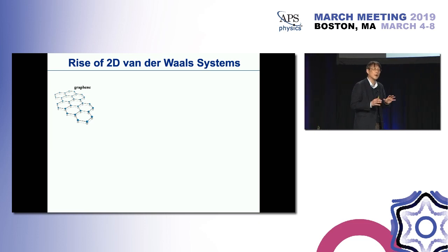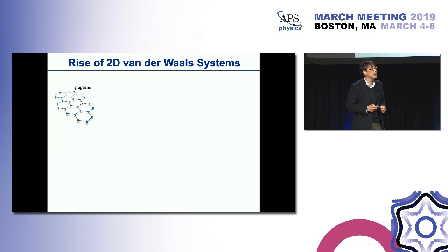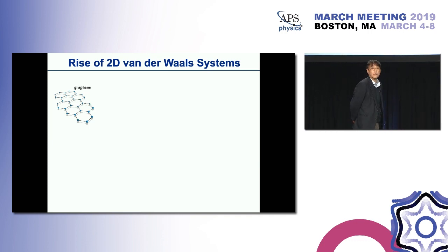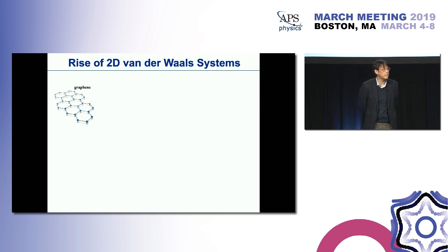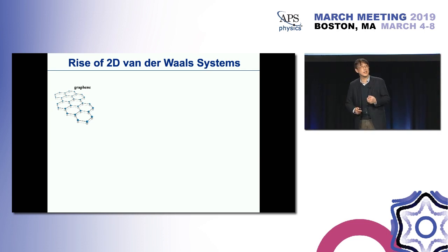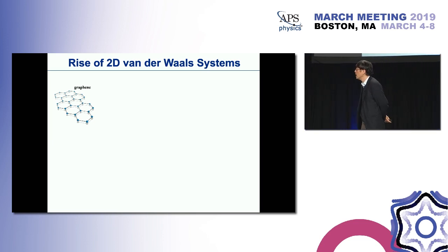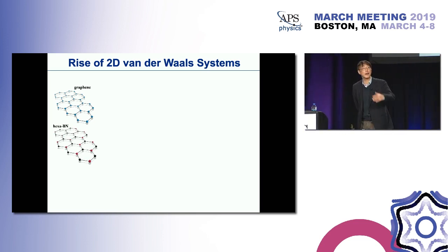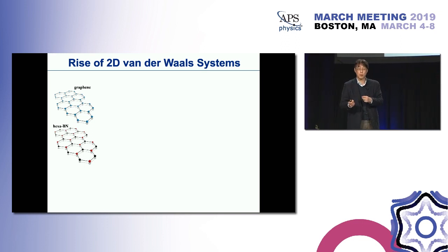A lot of people started to try to understand this two-dimensionality of the system, but that was just the beginning of really big endeavors. Soon after graphene, people started to realize there are other types of two-dimensional materials that can be produced, either by growth, exfoliation, or various methods. One by one, there was a rediscovery of these materials in extremely small atomic-layer form. For example, boron nitride, which is very similar to graphene in form — just replace the two carbon atoms with nitrogen and boron, making an ionic bond.